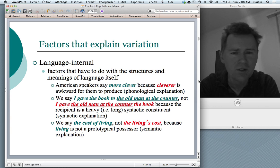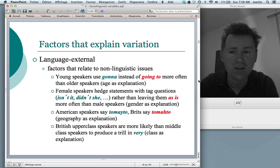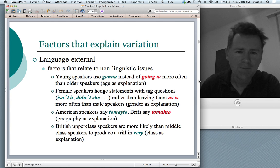I'll talk about now language external factors. So these are factors that relate to non-linguistic issues, social categories like age or gender, ethnicity, mobility, and so on and so forth. To give you also a few examples here, the variation between for instance gonna and going to. One is the contracted variant, if you like. The other is the more full variant. Here we observe an asymmetry that is related to age, so that young speakers use gonna more often than older speakers. And here we have age as an explanation. Nothing from within language, but rather something outside language that determines speakers' choices between those two variants.